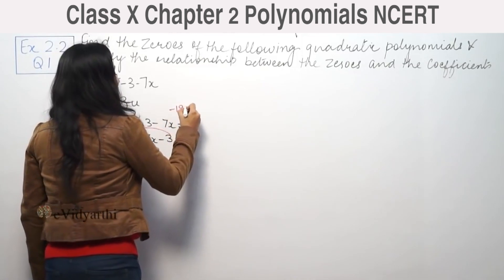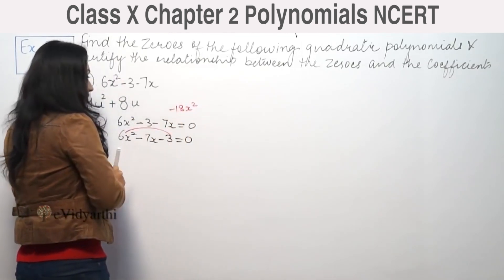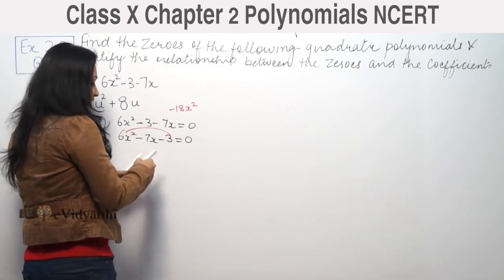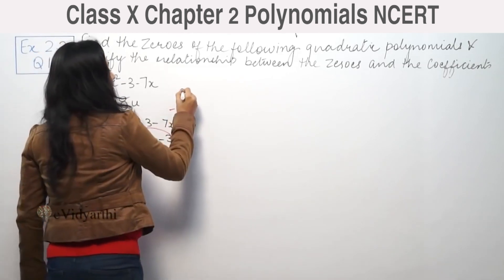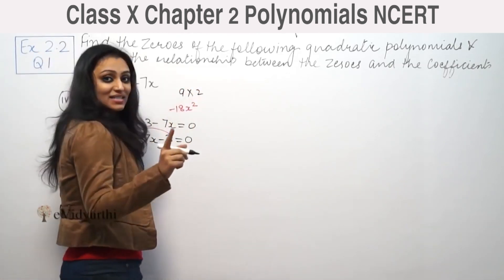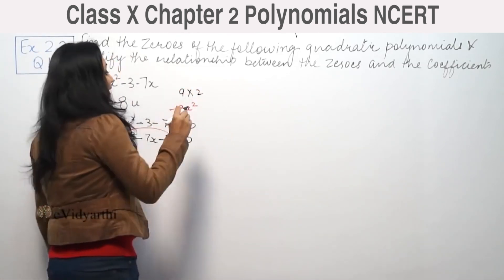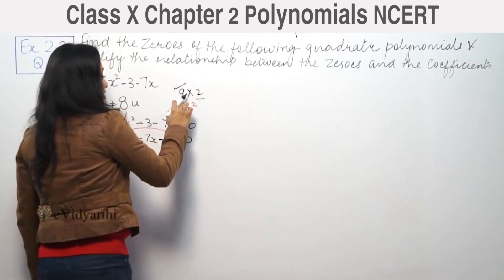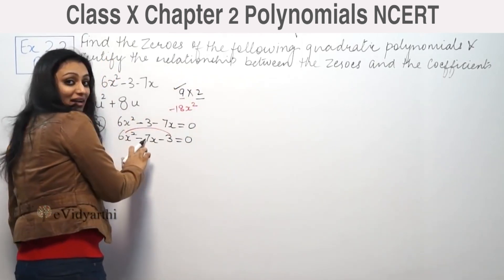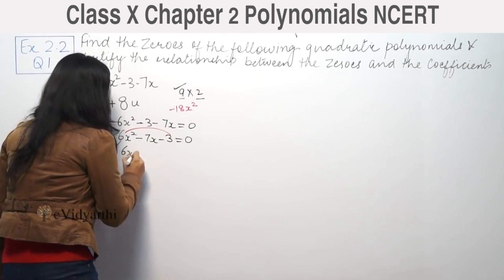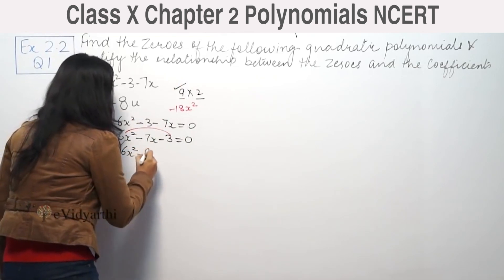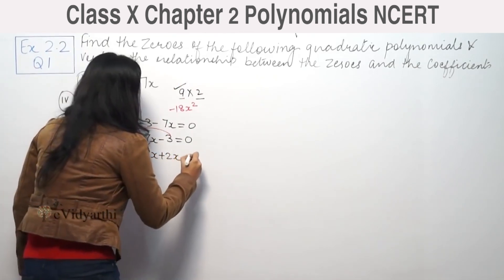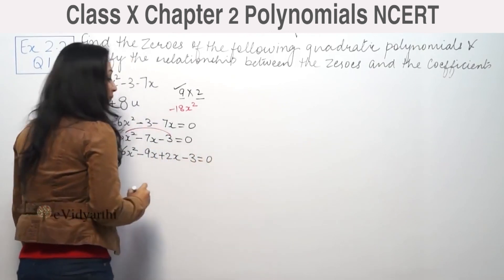Using the middle term splitting method, we multiply 6 and 3 to get 18. We need two numbers that multiply to minus 18 and add to minus 7, which are minus 9 and plus 2. So we split: 6x squared minus 9x plus 2x minus 3 equal to zero.